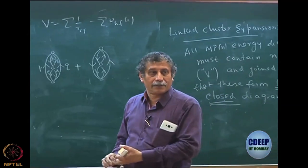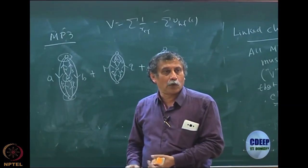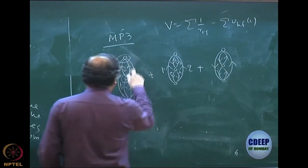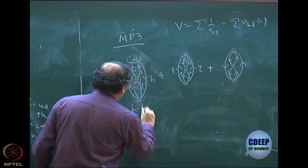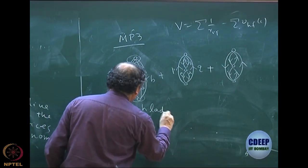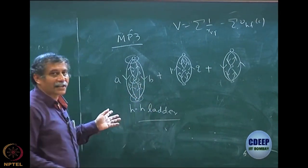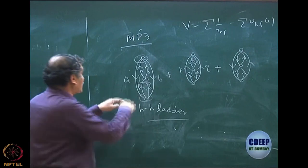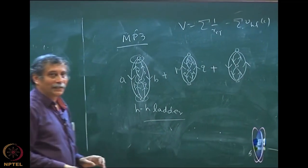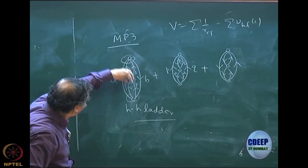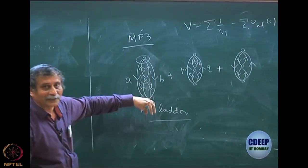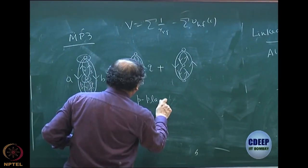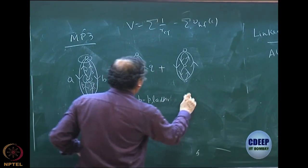These are separate diagrams and cannot be combined. This particular diagram is called the hole-hole ladder — there is a nice name in physics. You can understand that these diagrams are called ladder diagrams: you start from here, step, step. This is a hole-hole ladder because all the rungs are holes. The other is called the particle-particle ladder, or PP ladder.